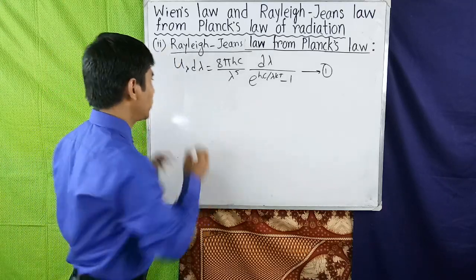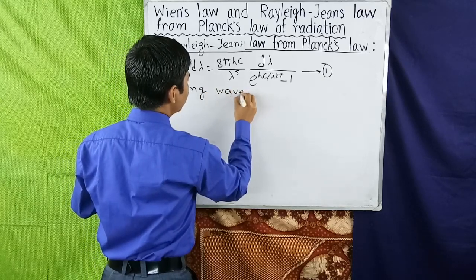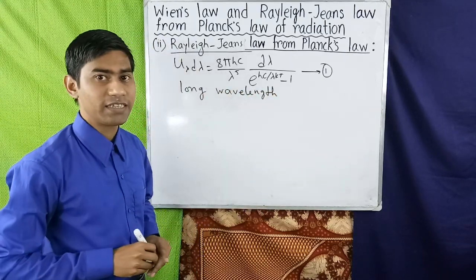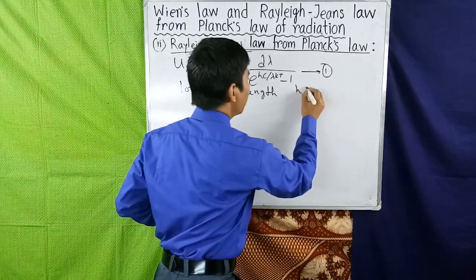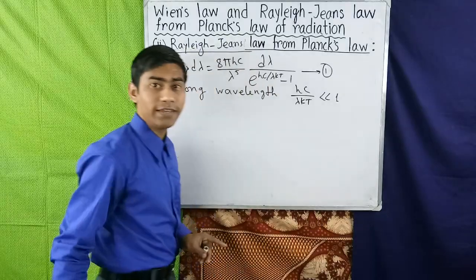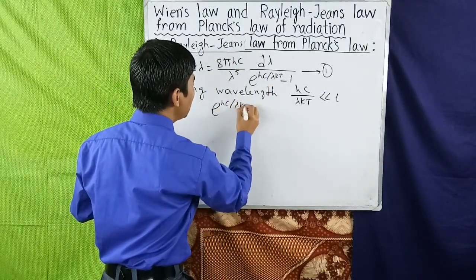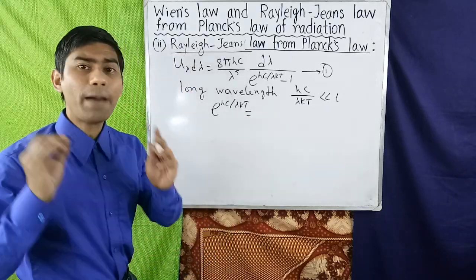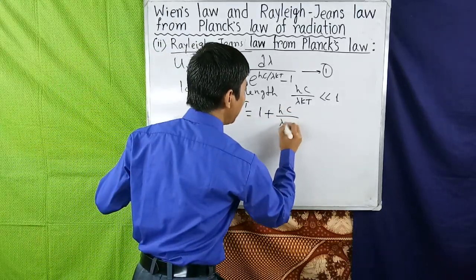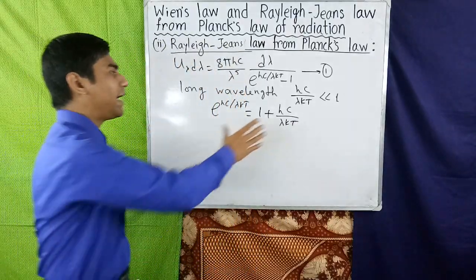For long wavelength or low frequency, hc/λkT is much less than 1. So the exponential term e^(hc/λkT) can be approximated as 1 + hc/λkT, where we neglect higher order terms.